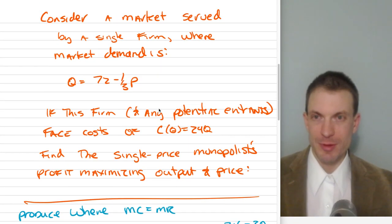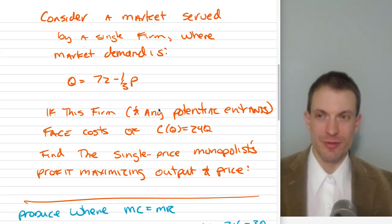Alright, so here's the problem. Consider a market served by a single firm where the market demand is Q equals 72 minus one third P. If this firm and any potential entrants face costs of 24Q, this is our total cost function, find the single price monopolist profit maximizing output and price.